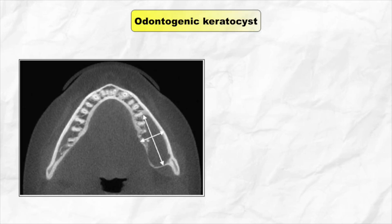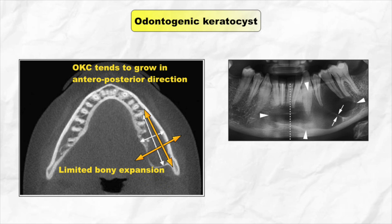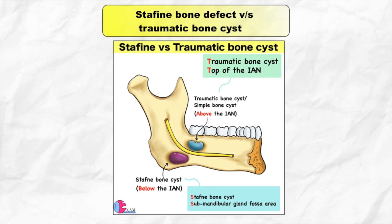Next concept is about odontogenic keratocyst. Most cysts cause visible bony expansion. However, OKC can occur without any visible bony expansion, because OKC tends to grow in the anterior-posterior direction within the medullary cavity. Also remember, OKC can cross the midline, like a few other cysts.